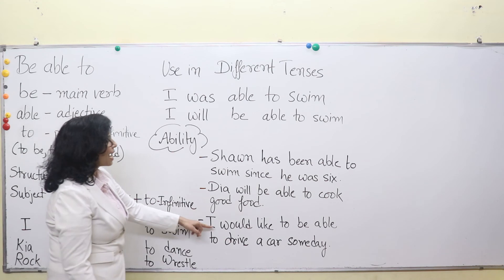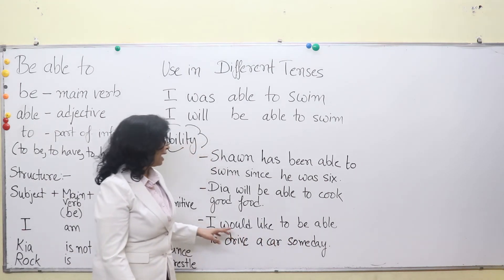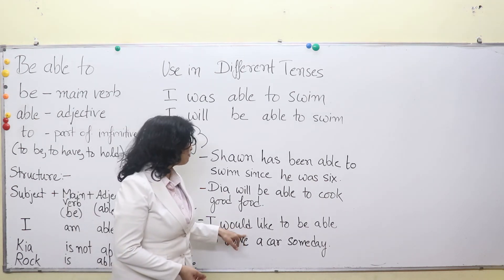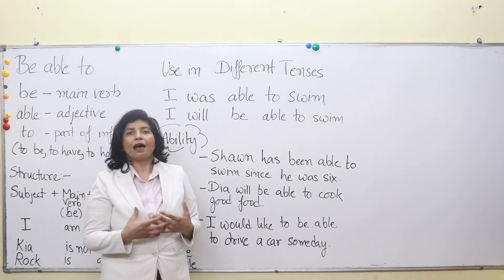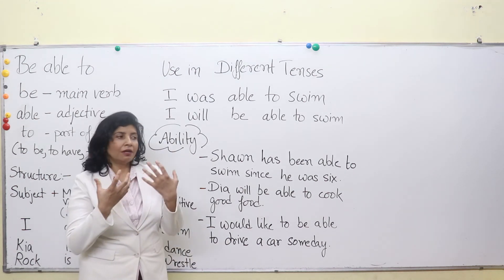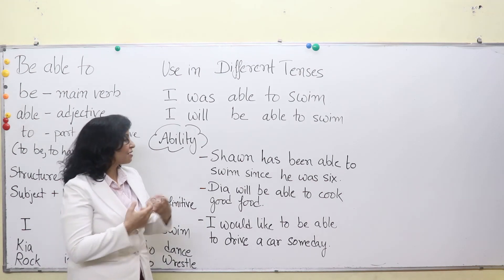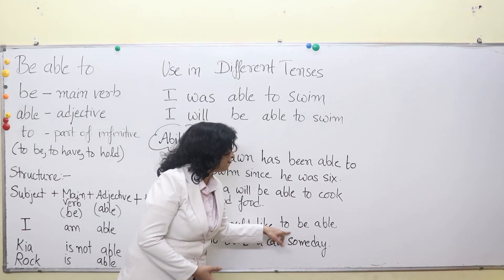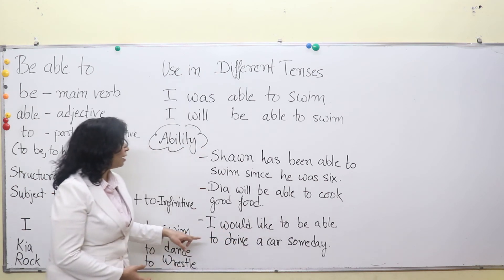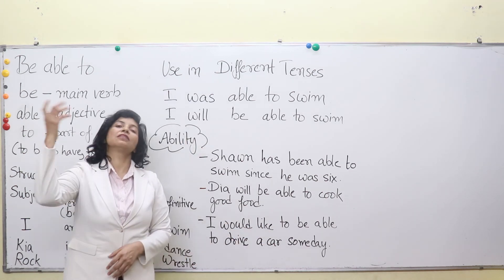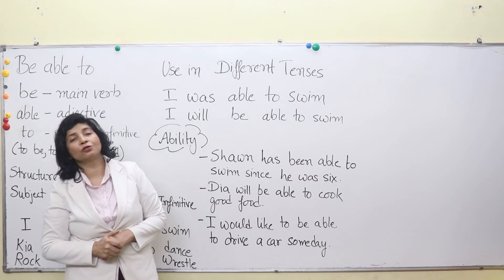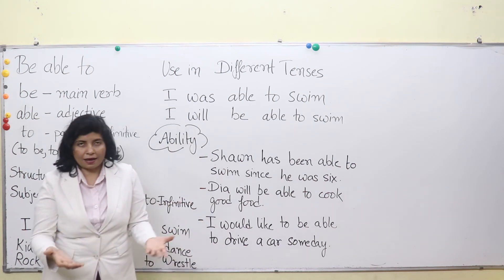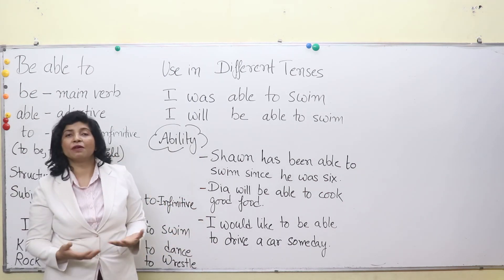'I would like to be able to drive a car someday.' This is a very nice sentence you can use in your own communication. 'I would like' means I would love — I would be pleased to see myself driving a car someday. Here, 'to be able to drive a car someday' is used — meaning there will be a day in future when I will be able to drive a car. These are the types of expressions you can make with 'be able to'.